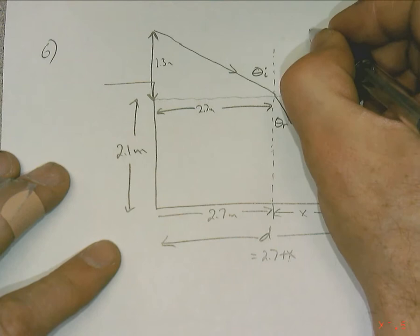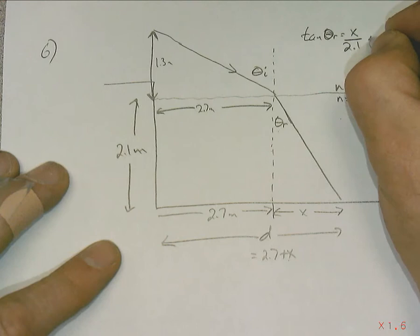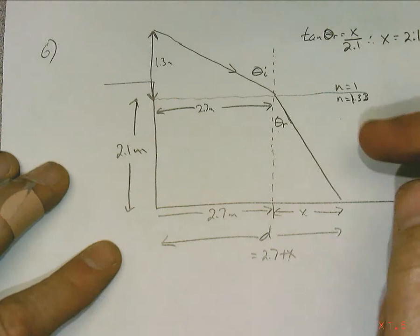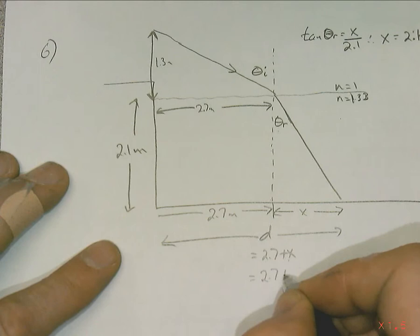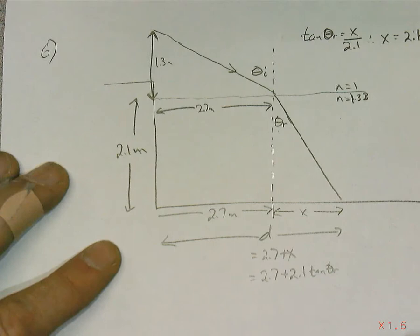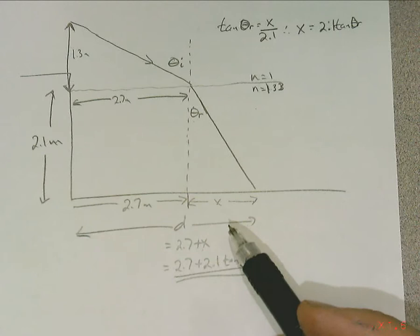And we know that tangent of theta r—2.7 plus 2.1 tangent of the refracted angle. That's our answer. I kind of like doing that because this problem is perhaps a little confusing. We've sorted through the high-level issue here. The big picture of what we have to do has just been sorted through, and it comes down to this.